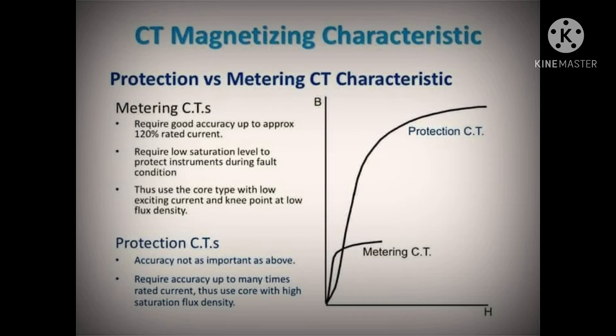Differential protection schemes should not trip on external faults. The magnetizing characteristics of both CTs used for differential protection must be the same, which means they have the same knee point voltage and the same excitation current at midpoint.